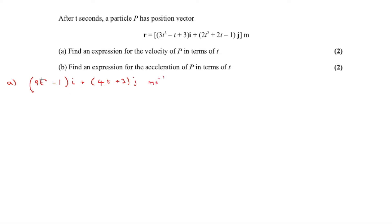To get from velocity to acceleration we differentiate once more. Differentiating 9t² gives 18t, so the i component is 18t. Differentiating the j component gives 4, so acceleration a = 18ti + 4j meters per second squared.